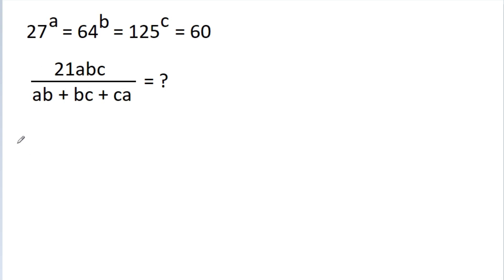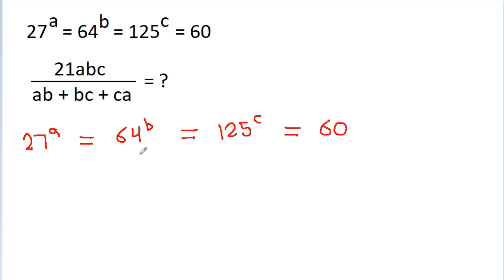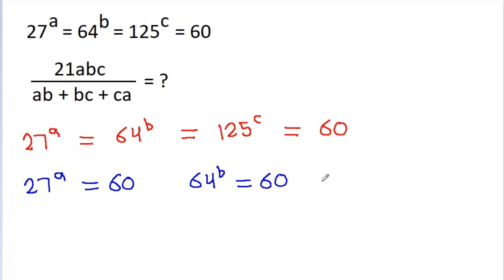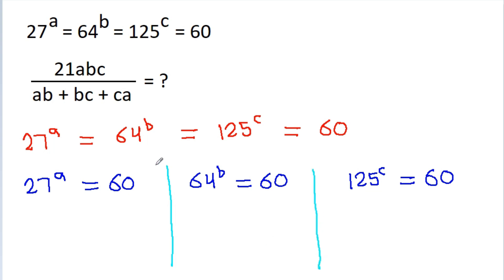We have given that 27 to the power a is equal to 64 to the power b, is equal to 125 to the power c, is equal to 60. So we can write: 27 to the power a is equal to 60, 64 to the power b is equal to 60, and 125 to the power c is equal to 60. We have to find the value of 21abc divided by ab plus bc plus ca.